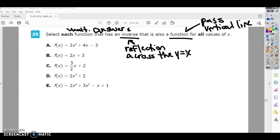All right, so we're trying to make sense of what we have to do here. So select each function that has an inverse, which means it reflects across the Y equals X, that is also a function. So it has to pass the vertical line test for all values of X.